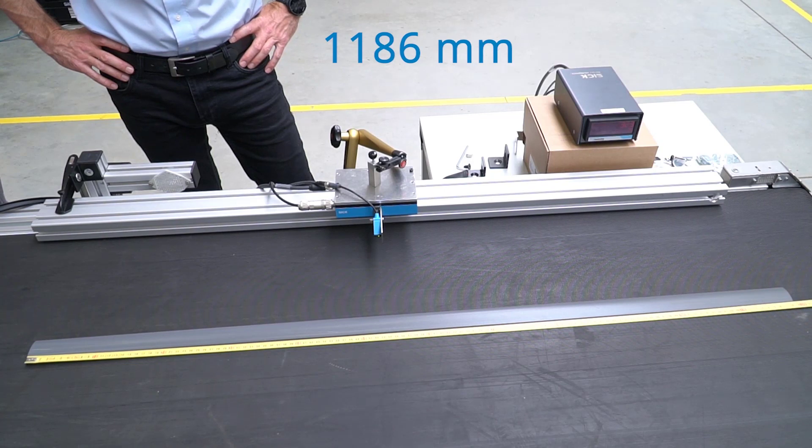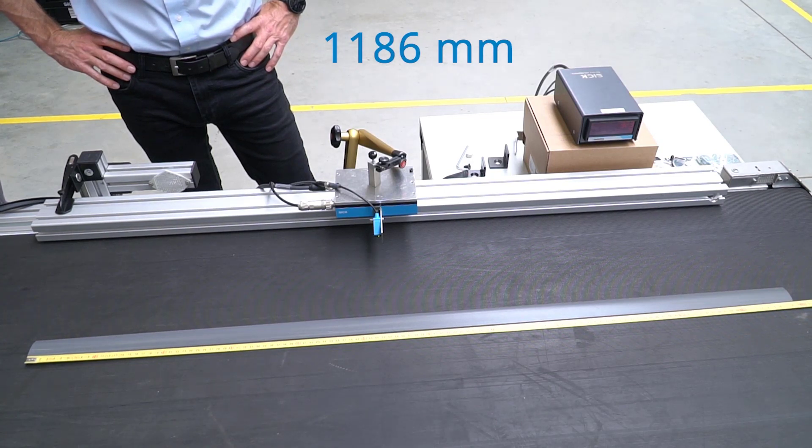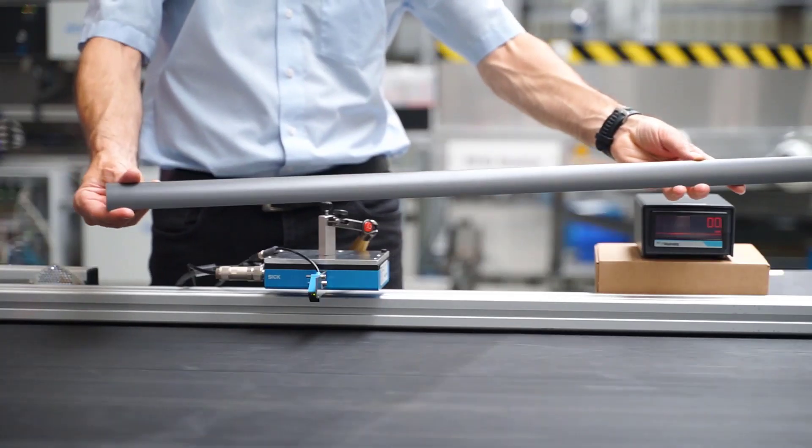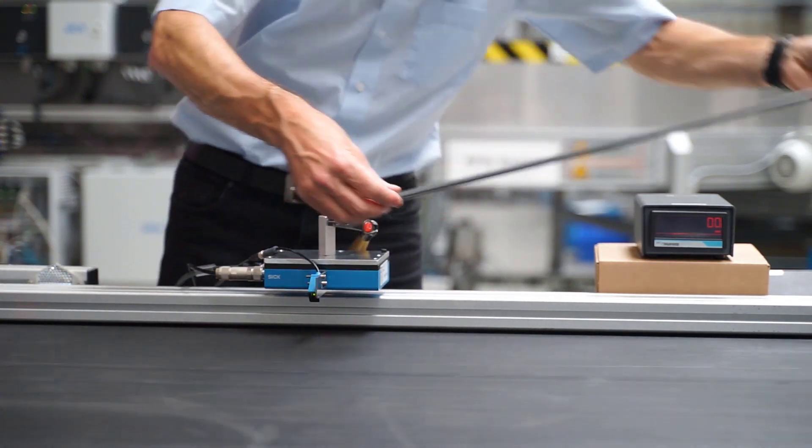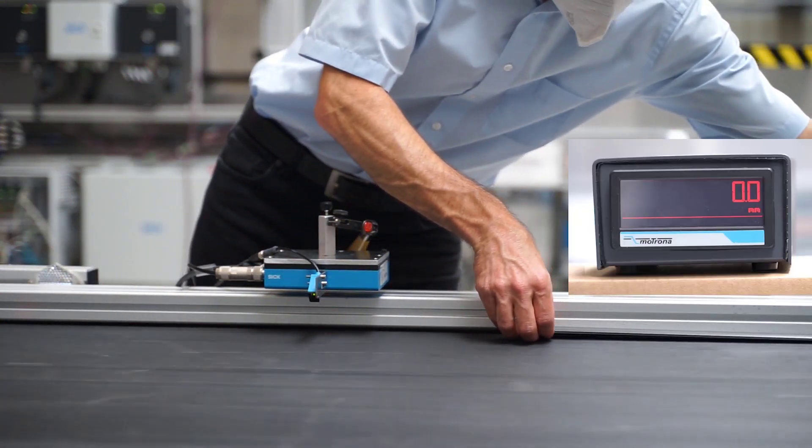To demonstrate, we will take a 1186mm long sample of plastic trim. Now we will measure the length of the trim as it passes the SPEETEC non-contact sensor.